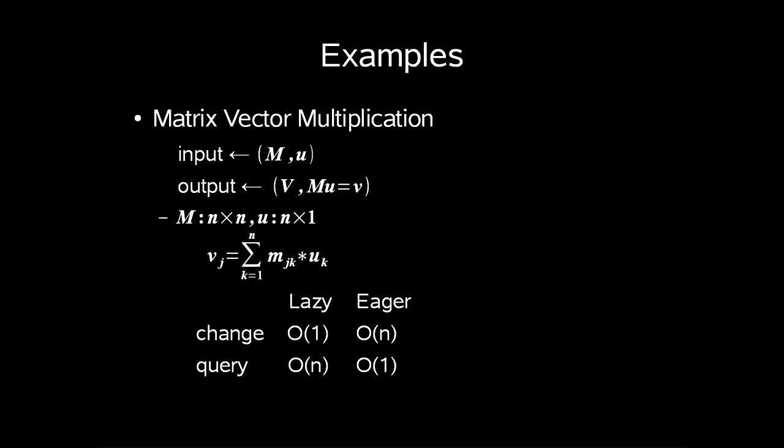This next example is somewhat extraordinary, because we show that the simplest implementation is actually the optimal solution. So when we talk about matrix vector multiplication, we have our input M and u, where M is an n times n matrix and u is some n times 1, which is a column vector. Our output is some n times 1 vector.